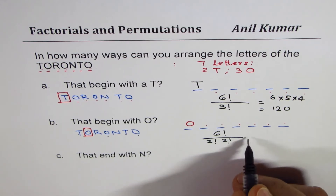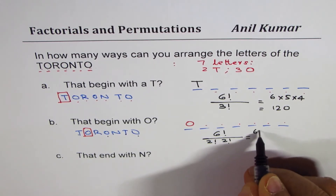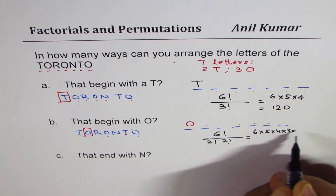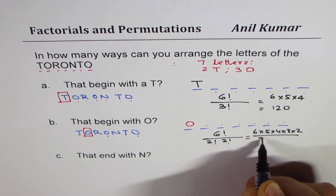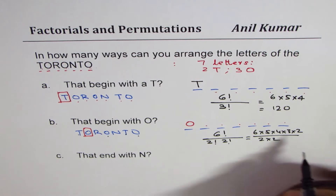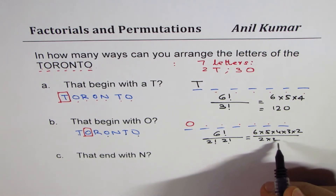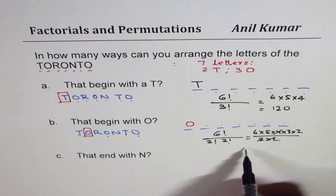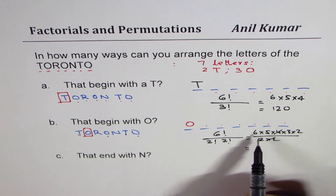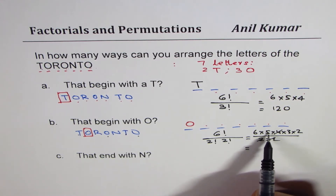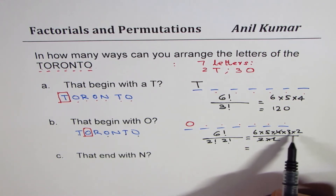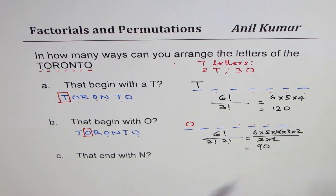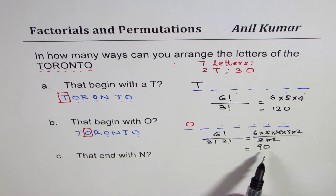So that makes it six times five times four times three times two, divided by two times two. Two times two is four. So six times five is thirty, thirty times six is... that gives us an initial calculation of 90.